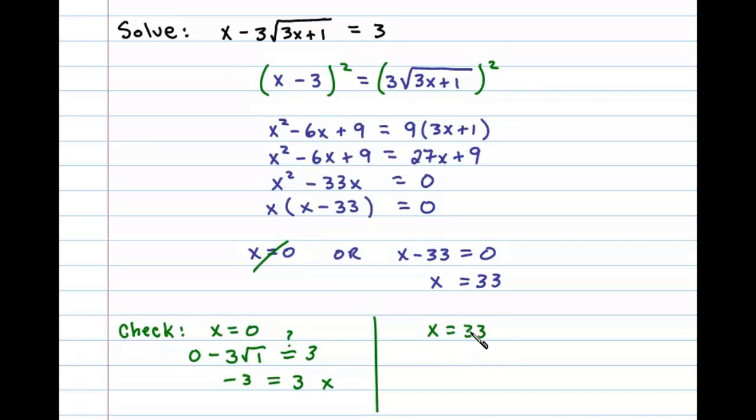Next we'll check x equals 33 into the original. We have 33 minus 3 times the square root of, substituting in 33, 3 times 33 is 99 plus 1, leaves us with the square root of 100, and we need to determine if that's going to be equal to 3. In this case we have 33 minus 3 times 10, and we can see here 33 minus 30 does equal 3. So x equals 33 is our only solution.